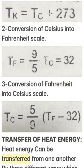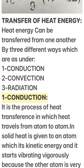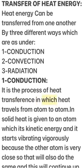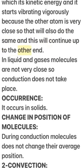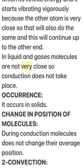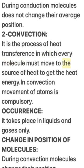Transfer of heat energy: Heat energy can be transferred from one place to another by three different ways. 1) Conduction: It is the process of heat transference in which heat travels from atom to atom in solids. Heat is given to an atom which increases its kinetic energy and it starts vibrating vigorously; because the adjacent atom is very close, it will also do the same, and this continues up to the other end. In liquids and gases, molecules are not very close, so conduction does not take place. Occurrence: It occurs in solids. During conduction, molecules do not change their average position.